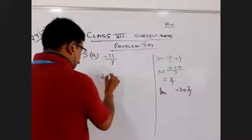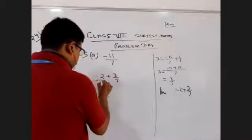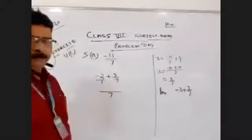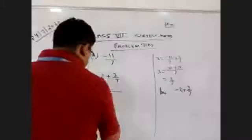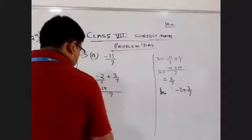Minus 2, 3 upon 7. Here, let us leave... 20 minus 14.